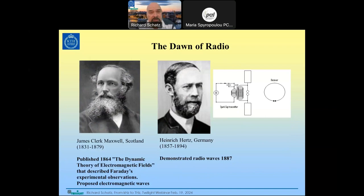There is a very large difference in both transmission speed and carrier frequency. Starting with the dawn of radio, we should really begin with Faraday experimenting with electricity and magnetism, and then James Clerk Maxwell, who formulated the theory in 1864 called the 'Dynamical Theory of Electromagnetic Fields,' in which he proposed electromagnetic waves and also that light was such an electromagnetic wave.